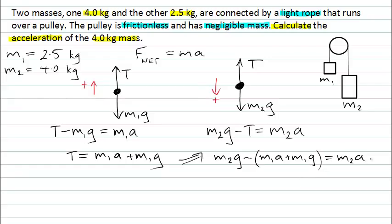Now with a little bit of algebraic manipulation, hopefully you can get some practice doing this yourself. I can show that the acceleration here will equal m2 minus m1 divided by m2 plus m1 multiplied by g.